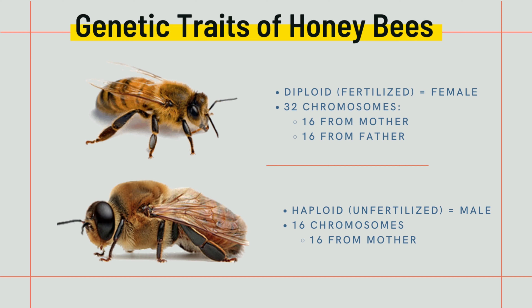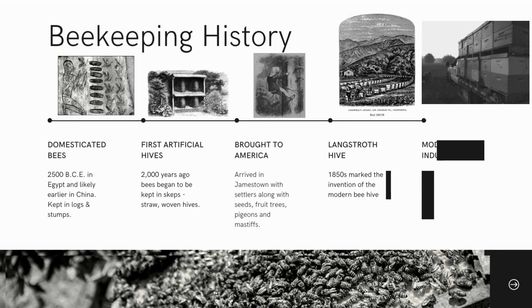This is where honeybee genetics really begins. A queen bee can choose to lay a female or a male egg. A female egg is a fertilized egg that consists of 32 chromosomes, where 16 come from the mother and 16 come from the father. A male egg is an unfertilized egg, where all the chromosomes come from the queen herself.